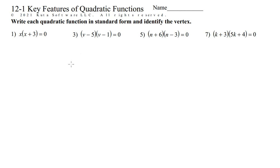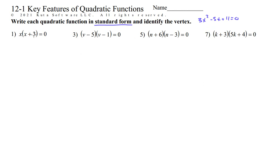Hello, this is Mr. Stansberry. I'm going to take you through some of the problems on the 12-1 worksheet. Write each quadratic function in standard form and identify the vertex. Standard form is just like when we're plugging stuff into a quadratic formula — something like 3x squared minus 5x plus 11 equals 0. That's standard form. So all we want to do here is multiply these all out, which gives you standard form, and then we can use standard form to find the vertex.